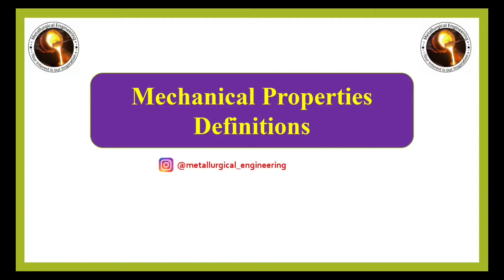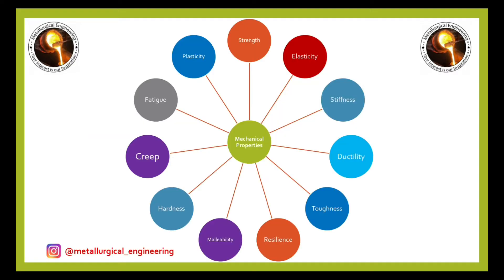Hello everyone. To understand any material in a better way, we need to understand the mechanical properties of that particular material. Mechanical property is something which reveals the physical response of any material under external stimuli. These mechanical properties are of different types such as strength, elasticity, stiffness, ductility, toughness, resilience, malleability, hardness, creep, and plasticity.